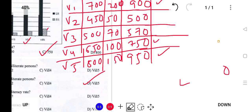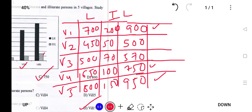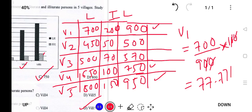Let's calculate the literacy rate for each village. Village 1: 700 divided by 900, multiplied by 100. This gives approximately 77.77 percent. So Village 1 has a literacy rate of about 77.77%.